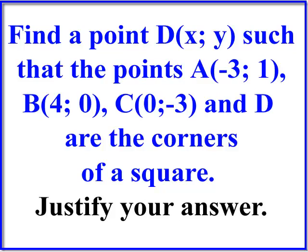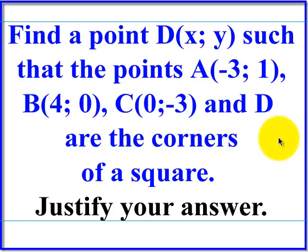Alright, you are given three points on a Cartesian plane, three coordinates, and you are asked to find the fourth one that would make your figure a square. So certain things about a square is all sides are the same length, and it has four right angles.